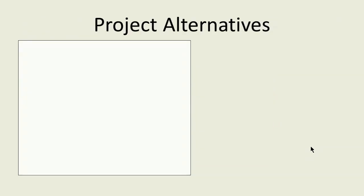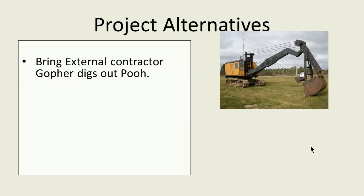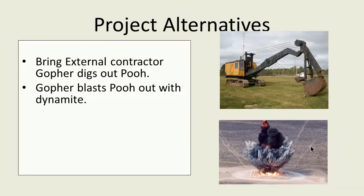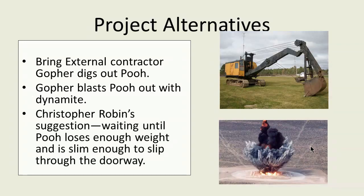We identified three alternative scenarios. First, external contractor Gopher digs out Pooh. Second, Gopher blasts Pooh out with dynamite. Or third, as Christopher Robin suggested, wait until Pooh loses enough weight that he can slip through the doorway.